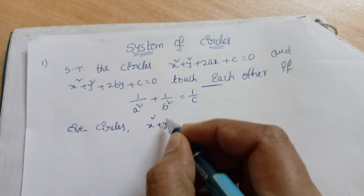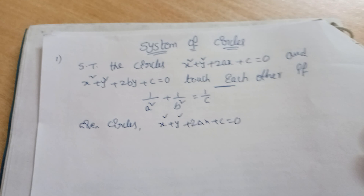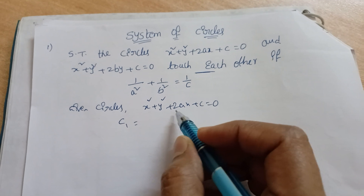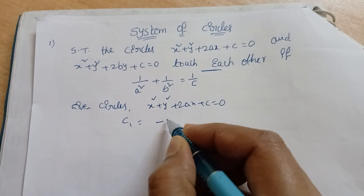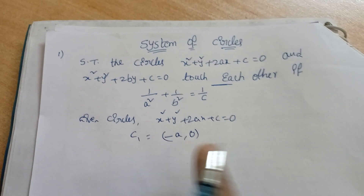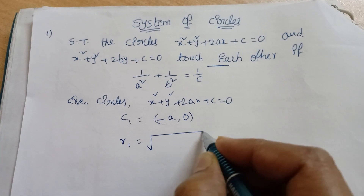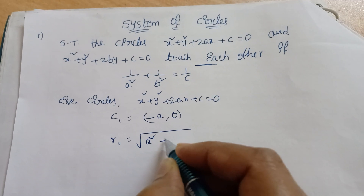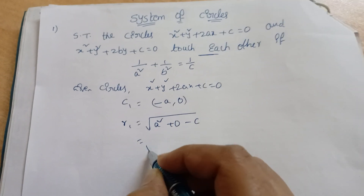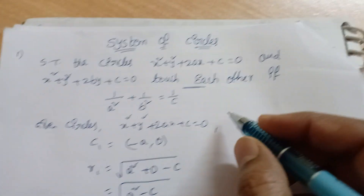The first given circle is x² + y² + 2ax + c = 0. Here, 2g = 2a, so g = a, meaning the center C1 = (−a, 0) — since there is no y term, the y-coordinate is 0. The radius r1 = √(g² + f² − c) = √(a² + 0 − c) = √(a² − c).